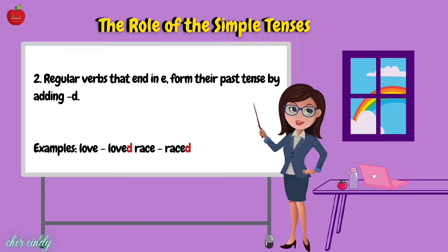Rule 2: Regular verbs that end in E form their past tense by adding D. Examples: love → loved, raise → raised.